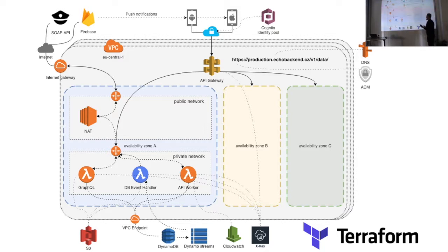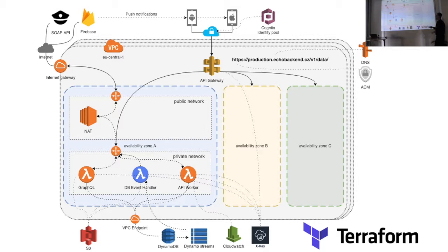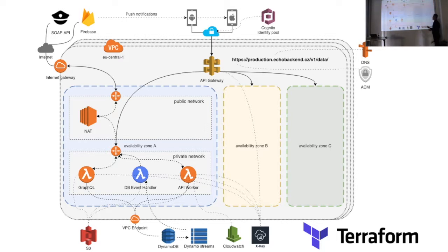All of this is based in AWS. We have a React Native application with an Apollo client inside. To give you a broader perspective about this infrastructure, the gray area represents a region — a location, which you can think of as a data center. It could be in Frankfurt, in America, or in any of the data centers that Amazon provides.